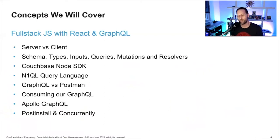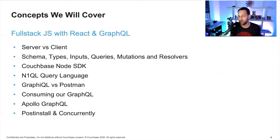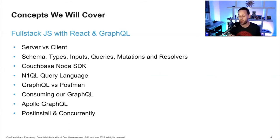We'll also be using React and Apollo GraphQL on the client side, and Express and Express GraphQL on the server side. In our Express application, we'll also use the Couchbase Node.js SDK to connect to our Couchbase database, make queries, and return data back to the API. We'll cover concepts like server versus client, GraphQL schemas, types, inputs, queries, mutations, resolvers, the N1QL query language, GraphiQL, Postman, Apollo GraphQL in React, and tools like post-install and concurrently.